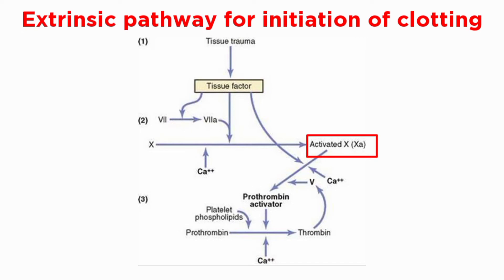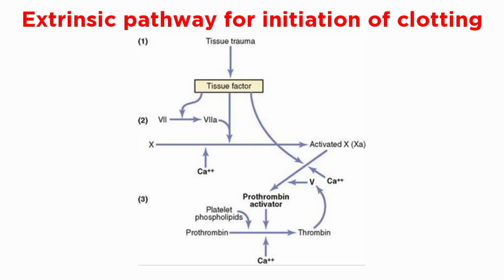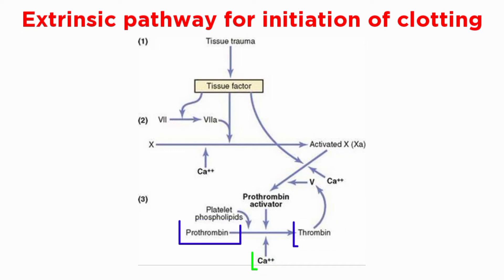The activated factor 10 combines immediately with tissue phospholipids that are part of tissue factors, or with additional phospholipids released from platelets, as well as with factor 5, to form the complex called prothrombin activator. Within a few seconds, in the presence of calcium, prothrombin is split to form thrombin and the clotting process proceeds.